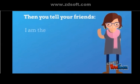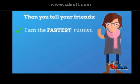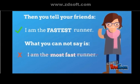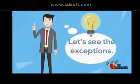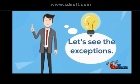You tell your friends: 'I am the fastest runner,' which is correct. What you cannot say is 'I am the most fast runner.' This is not right. Now we're almost done, so let's see the exceptions.